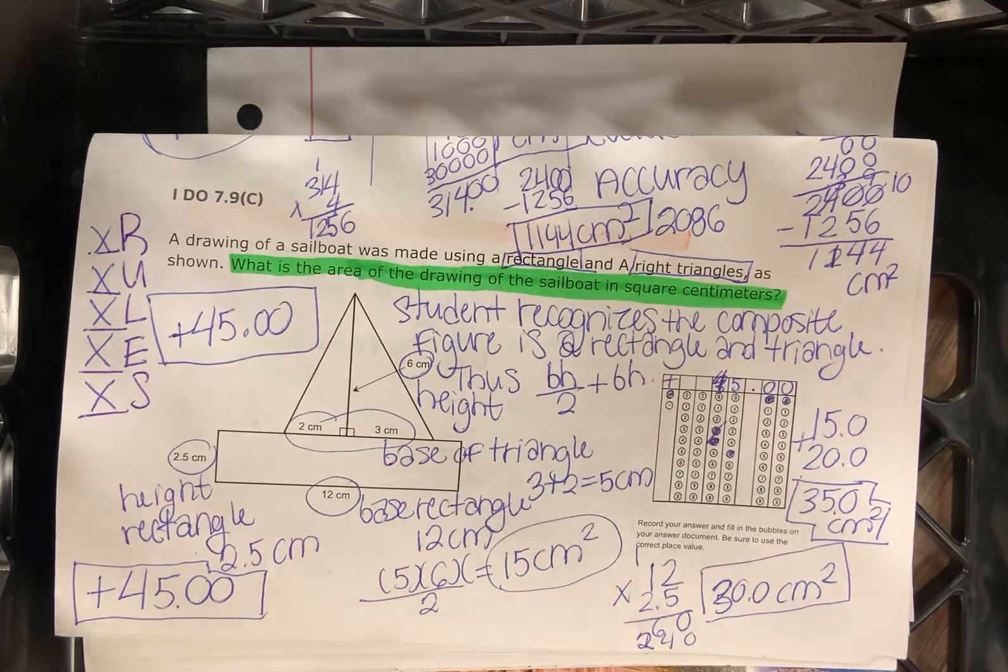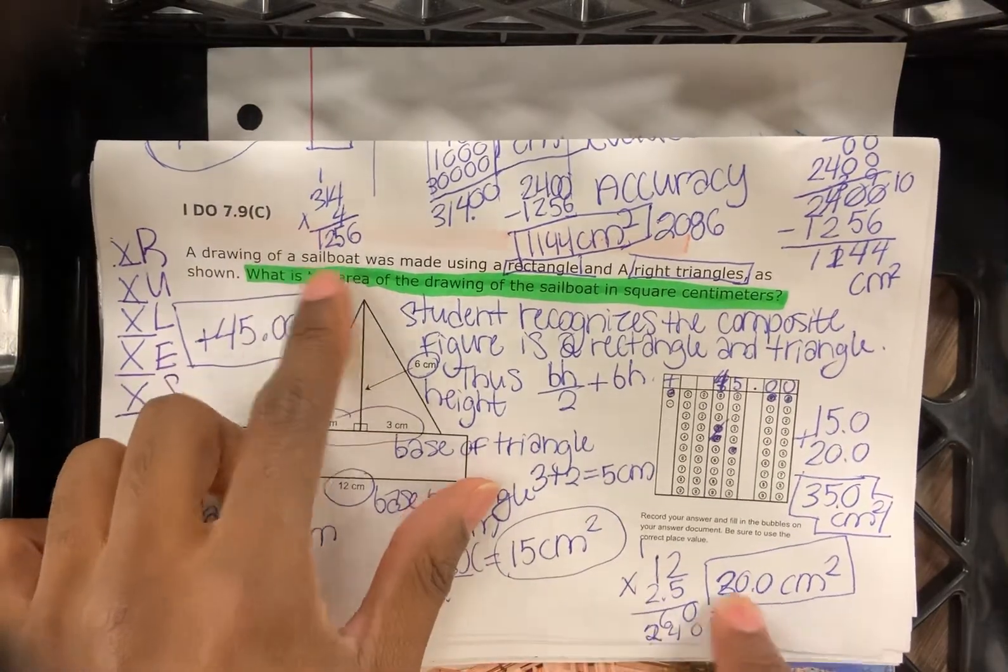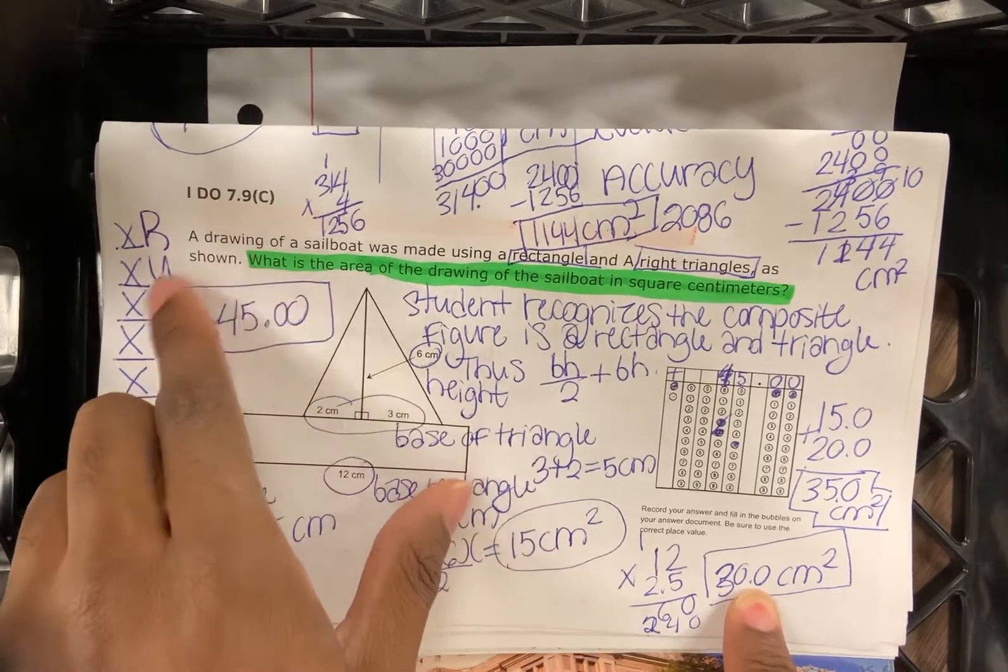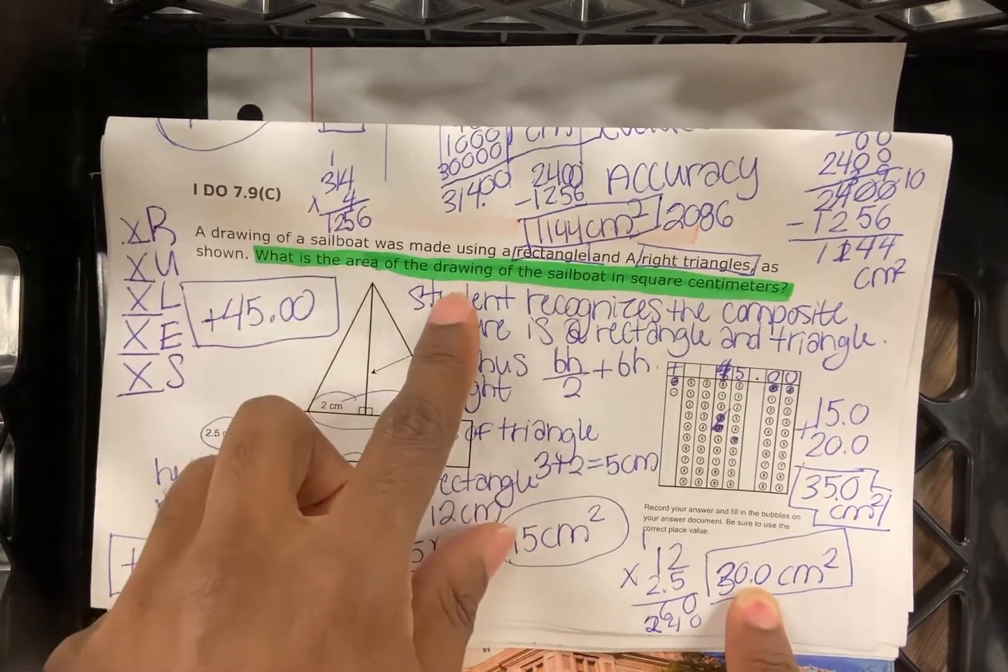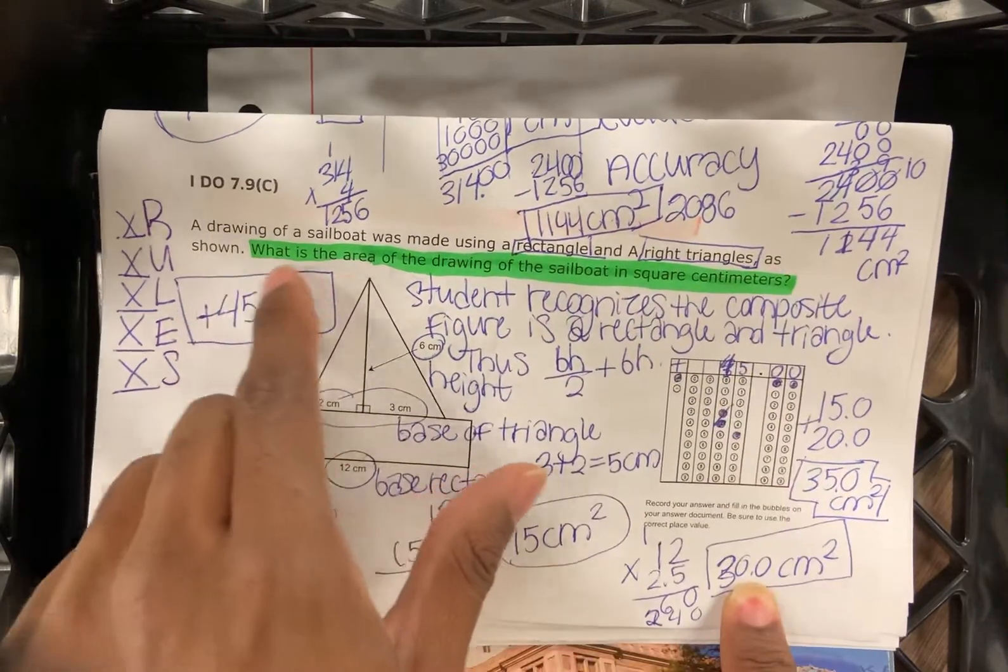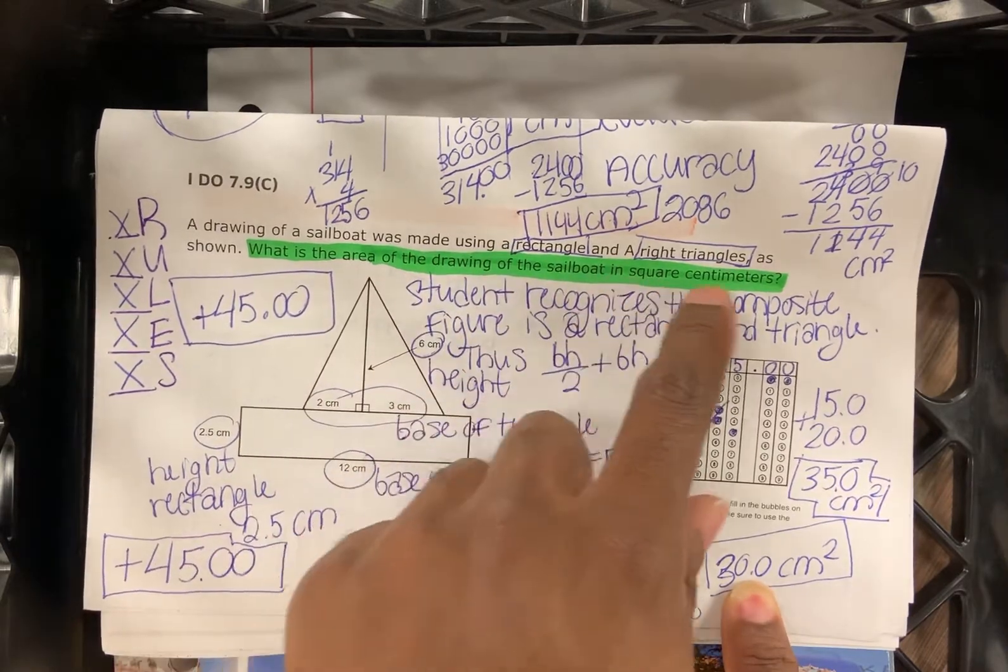All right. 7.9C, composite shapes, composite figures. We're going to read the word problem and highlight and underline the specific question. A drawing of a sailboat was made using a rectangle and right triangles as shown. What is the area of the drawing of the sailboat in square centimeters?